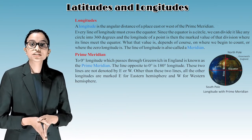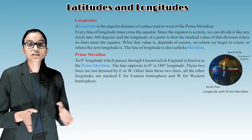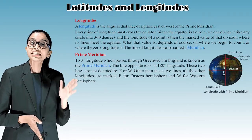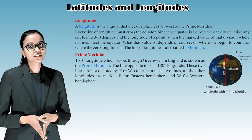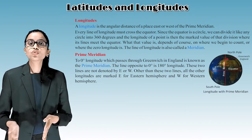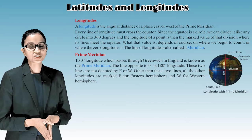Other than these two lines, all other longitudes are marked E for the eastern hemisphere and W for the western hemisphere.